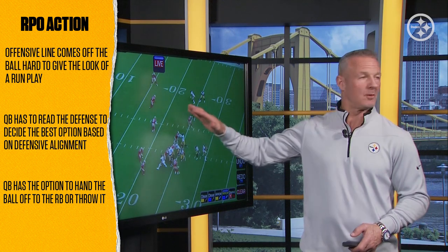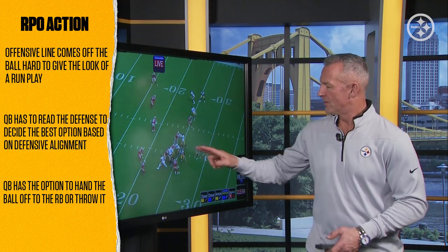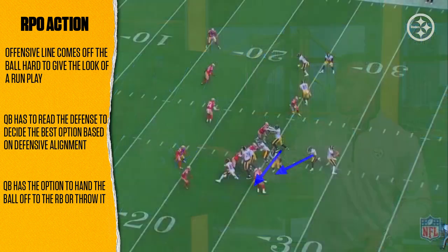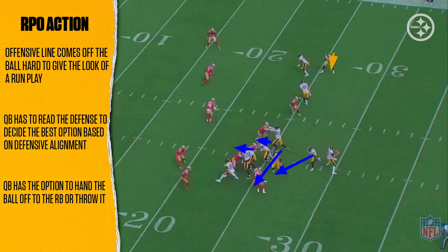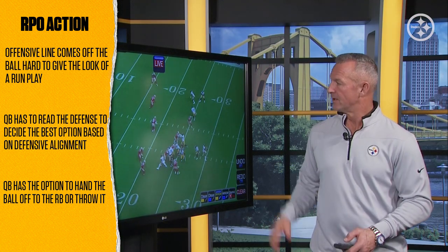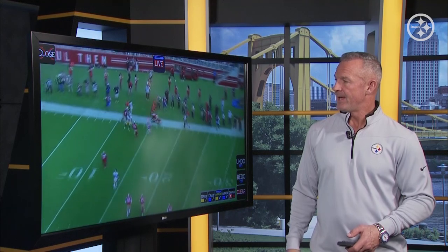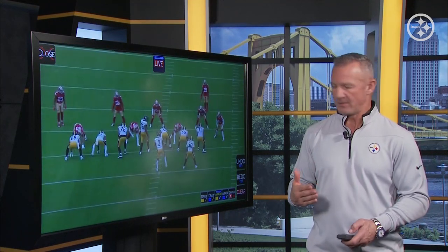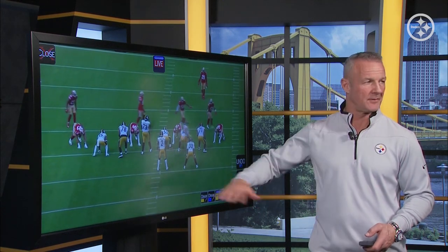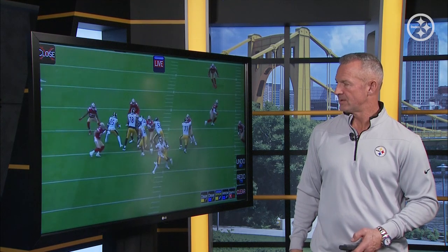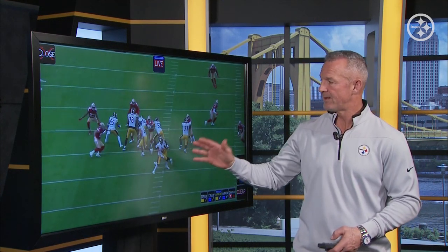Here's what we would consider an RPO — a run-pass option. Based on whatever read the quarterback is given, with the guard pulling and the running back coming through, he could have handed the football off. Based on how they're blocking, you've got good alleys to run through, but you also have the pass option. This is an RPO version — based on his read, he could hand it off or throw it. With run action, you're clearly throwing it; it's not an option to hand off. That's the key difference: an RPO has built-in options.